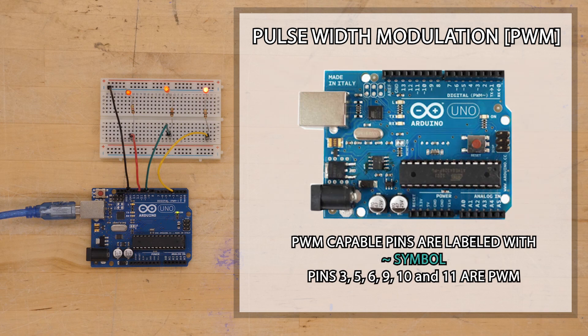Not all digital pins can do PWM. On the Arduino Uno, the PWM pins are labeled with a squiggle sign. The PWM pins are 3, 5, 6, 9, 10, and 11.